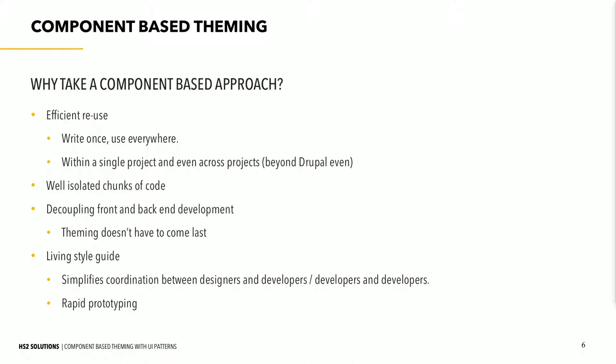Why would somebody do this? What are the advantages? Efficient reuse is a big part of it. If you build these components, you can reuse them in a consistent way — write it once, use it in a bunch of different places, including smaller pieces inside larger components. You can reuse them within a single project, across other projects, or even outside of Drupal if your pattern library is an external dependency. It can give you nicely isolated chunks of code, especially if you're following a naming convention like BEM — block element modifier. It's really easy to see what your component is, what the sub-elements are, and understand what relates to what, and scope your styling so it doesn't bleed out to other things.